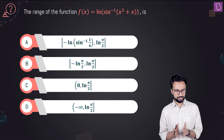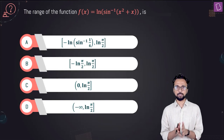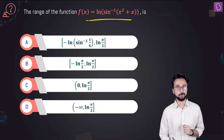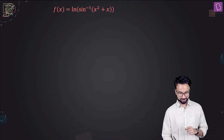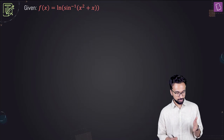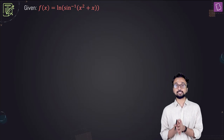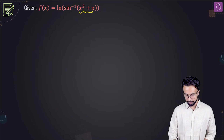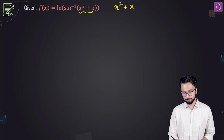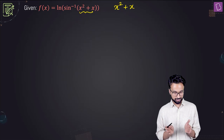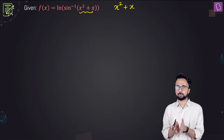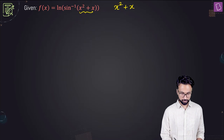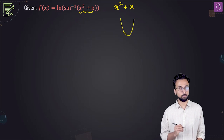Now look at this question: we are simply looking for the range of the given function f(x) equals the natural log of sine inverse of x squared plus x. We'll start at a granular level by looking at x squared plus x, which is clearly an upward-facing quadratic with a positive coefficient of x squared, so it has a minimum value and its maximum is infinite.